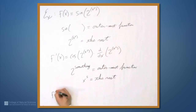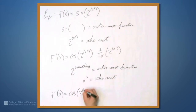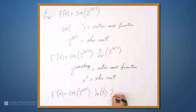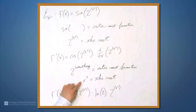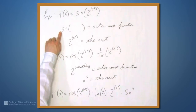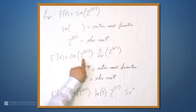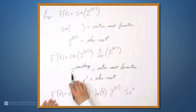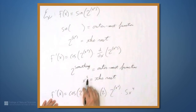So f' of x is cosine of 2 to the x to the fifth, times the derivative of 2 to the something — which is the natural log of 2 times 2 to the x to the fifth — times the derivative of the rest. And here it's just x to the fifth, so times 5x to the fourth. We started with the outermost function sine, took its derivative, evaluated at what's inside, and multiplied by the derivative of what's inside. To find that inner derivative, we used the chain rule a second time with 2 to the something as the outermost function and x to the fifth as the rest.